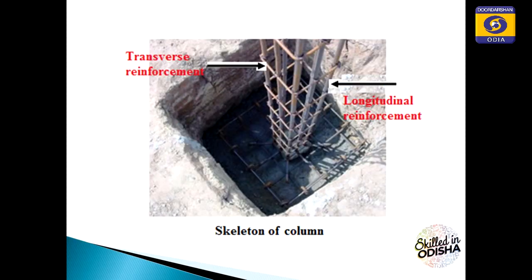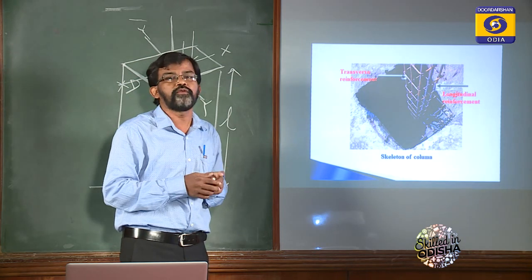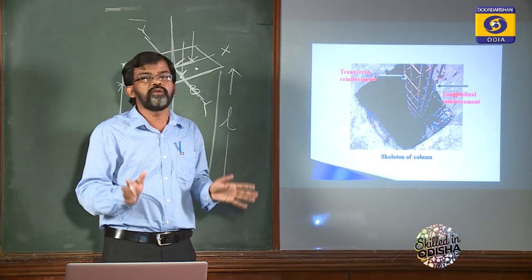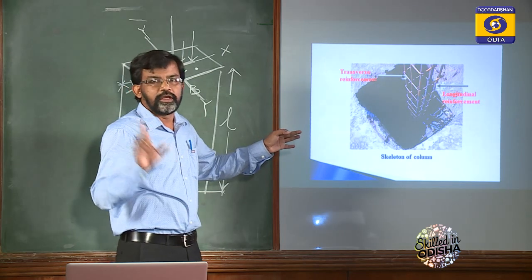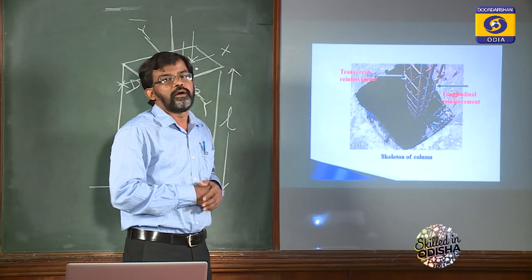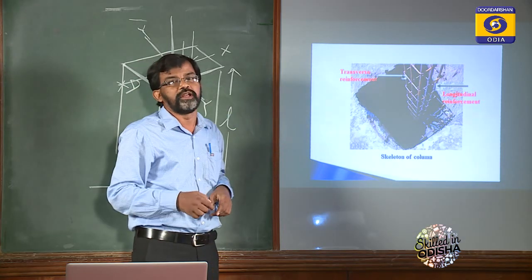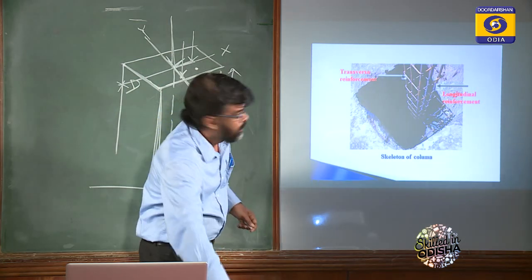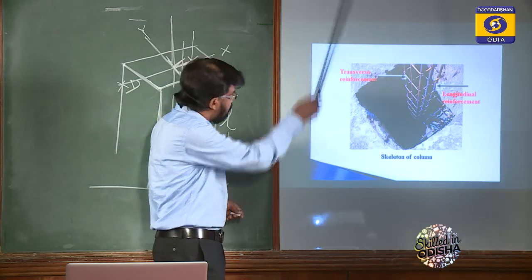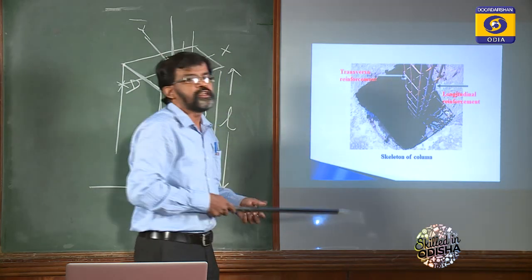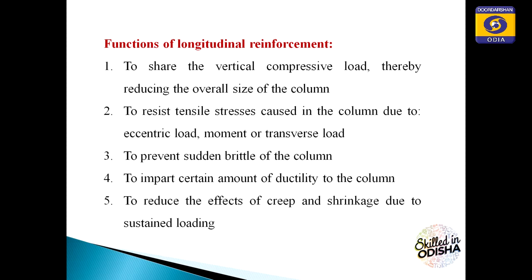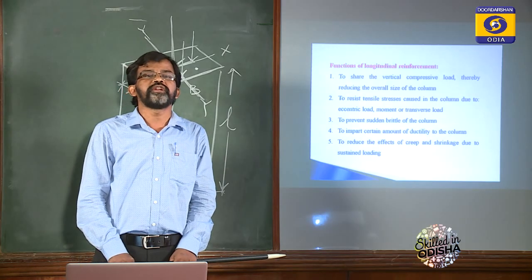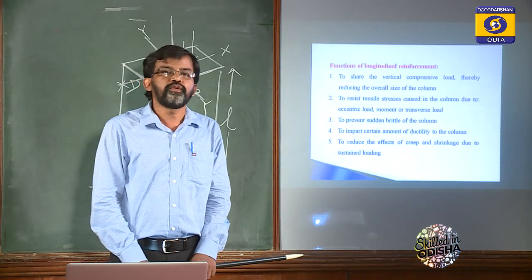This is the skeleton of a reinforced concrete column. We are studying reinforced concrete structures. You must have observed column casting on a building site: there are longitudinal steels along the length of the column, and transverse steels binding the longitudinal steel together, known as transverse reinforcement. Now I will discuss the functions of longitudinal reinforcement — why we provide reinforcement in an RC column.